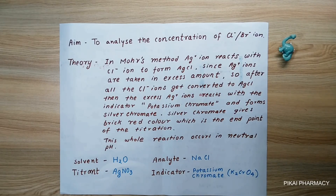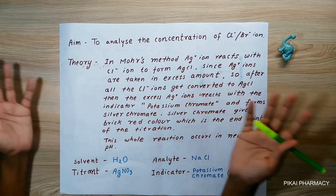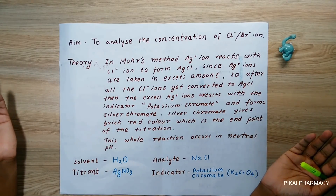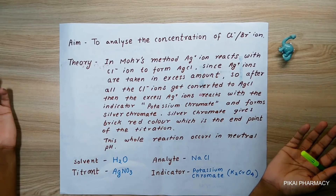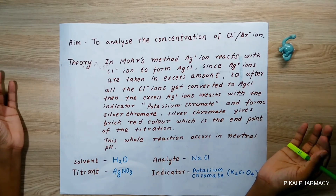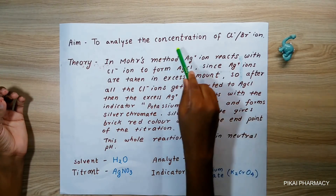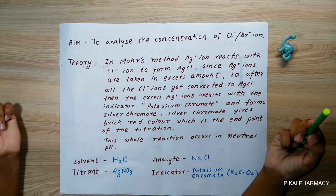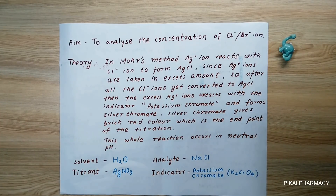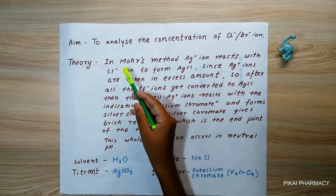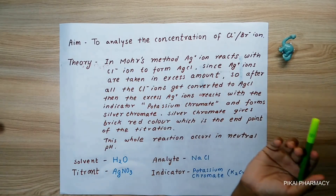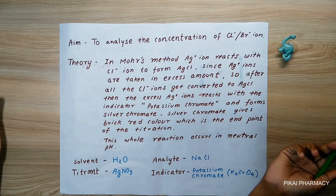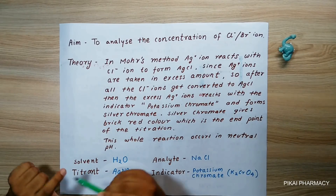In this video we are going to learn about the Mohr method in precipitation titration. It aims to analyze the concentration of chlorine and bromine ions. Let's go to the theory of this Mohr method.